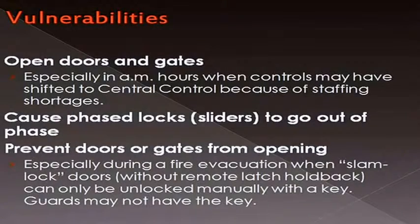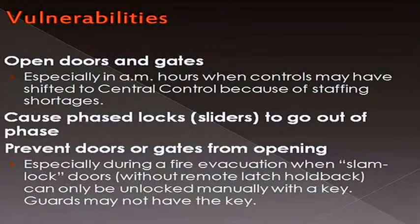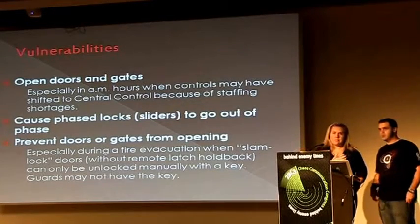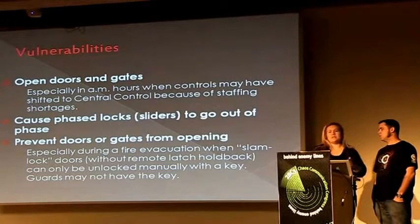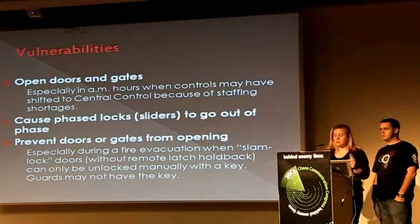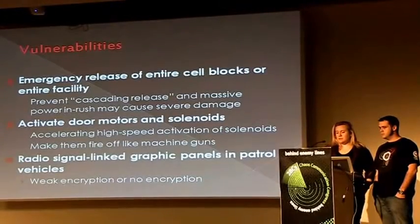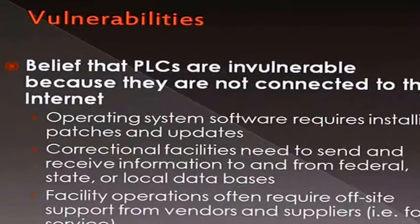Now we'll look at some of the vulnerabilities. We can open doors and gates, cause phase lock sliders to go out of phase. If you remove the program for the cascade, the speed of the door, you can break the door — those locks are done for the whole prison. We theorized an attack where say there's a witness in another cell block someone wouldn't want to testify — you could lock down entire housing units or the whole prison. Prison fires happen quite often, a lot of prisoners light their mattresses on fire, and one of the things done is that some doors used to slam shut. Now the slam door locks can only be manually unlocked with a key.